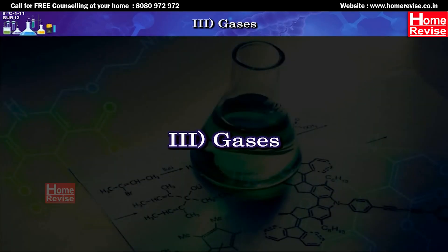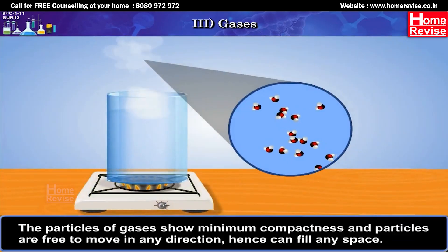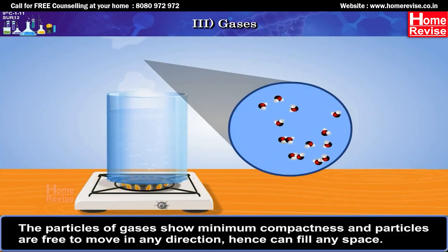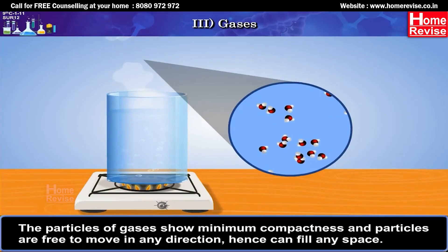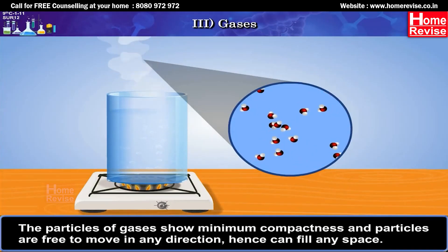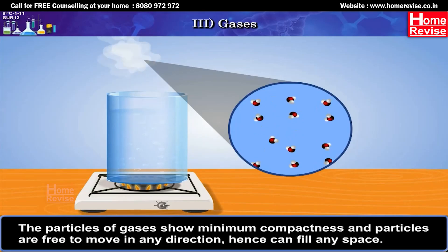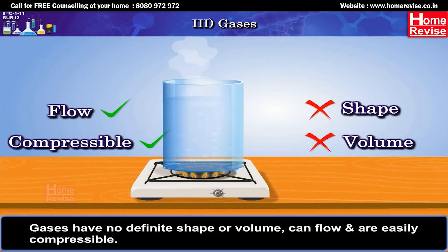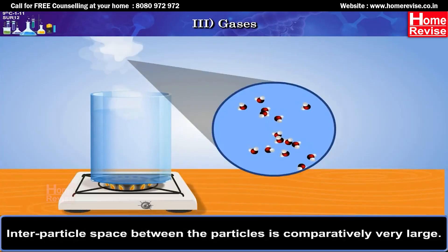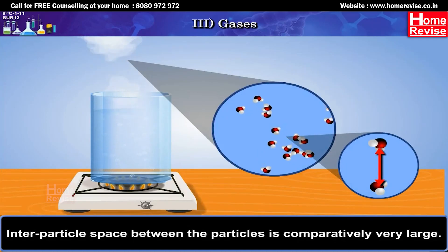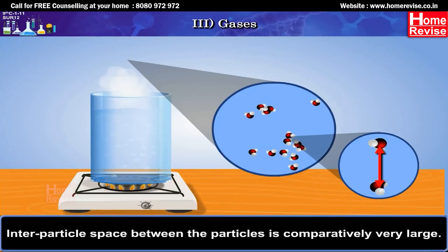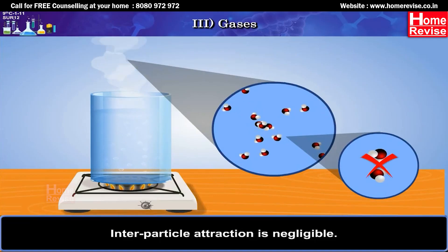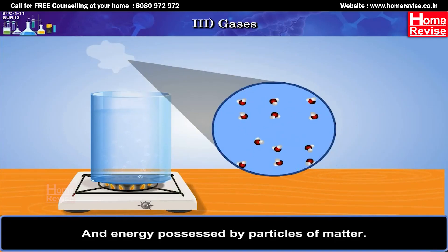Third, gases: The particles of gases show minimum compactness and particles are free to move in any direction, hence can fill any space. Gases have no definite shape or volume, can flow and are easily compressible. Interparticle space between the particles is comparatively very large. Interparticle attraction is negligible. Kinetic energy of molecules in a gas is very large.